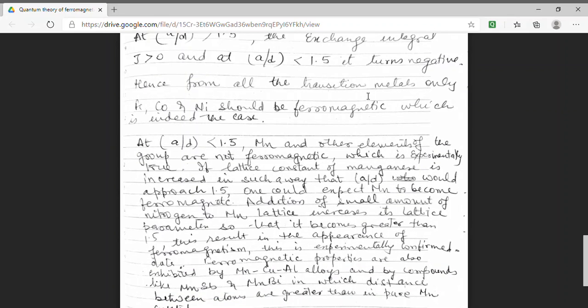Manganese, Copper, Aluminium alloy, they also show ferromagnetic property. Other compounds of Manganese, Mn-Sb, Mn-Bi, they are also ferromagnetic in nature. Because for these alloys and compounds, A by D factor becomes greater than 1.5.